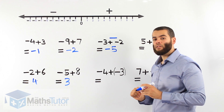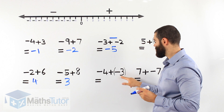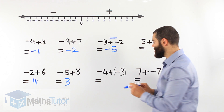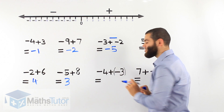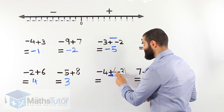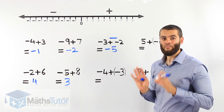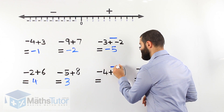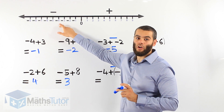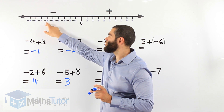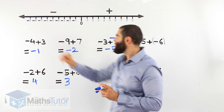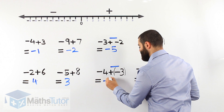Once again, negative 4 plus, in brackets, negative 3. Don't get confused by the brackets — it's exactly the same. The brackets are just there to distinguish the signs. Sometimes you'll see brackets, sometimes you won't — disregard them. Negative 4 plus minus 3: plus and minus don't like one another, they have a fight, and minus will always win. So it becomes minus 4 minus 3. We start at minus 4 and go back 3: 1, 2, 3. So negative 4 minus 3 is negative 7.